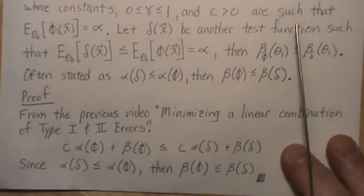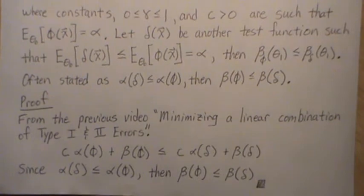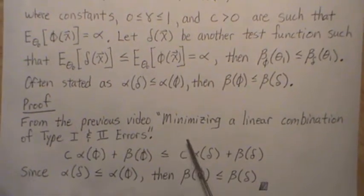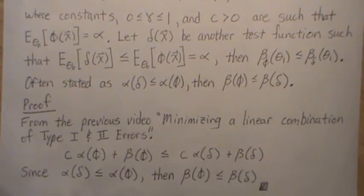Now the proof is very short because we did a lot of the heavy work in the previous video. In the previous video, which I called minimizing a linear combination of type 1 and type 2 errors,